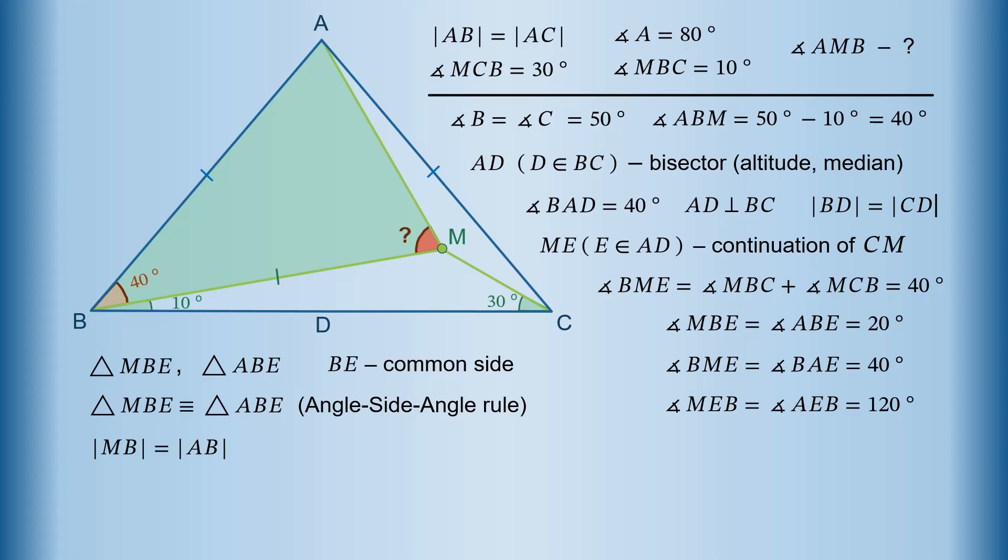So we can find the value of its base angles, one of which is the angle AMB we are after. Thus, the value of angle AMB equals the value of angle MAB equals 180 degrees minus 40 degrees, then divided by 2. The result is 70 degrees, and this is the answer to the problem.